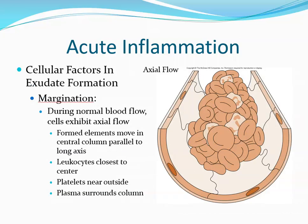Next we look at cellular factors in exudate formation, involving circulating leukocytes, especially neutrophils. This entire process is referred to as leukocyte emigration. The first stage is margination. During normal blood flow, cells exhibit axial flow — formed elements move in a central column parallel to the long axis of the vessel. Leukocytes are closest to the center because they are the largest and heaviest, while platelets are near the outside as the smallest and lightest.